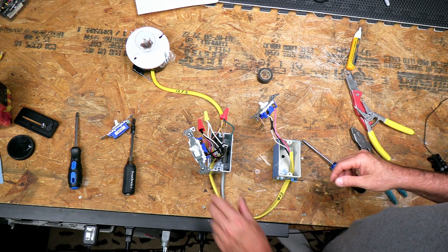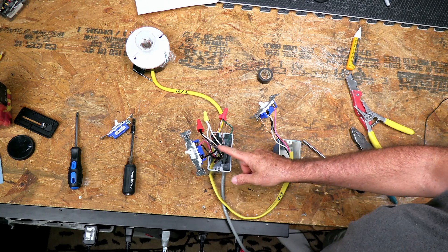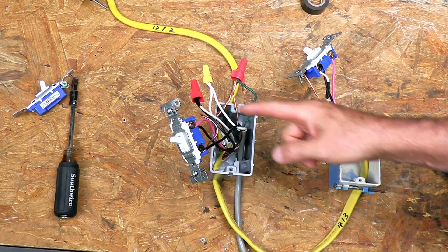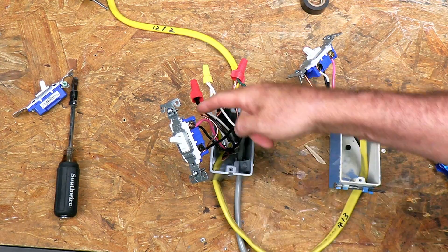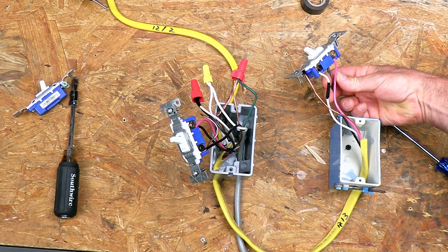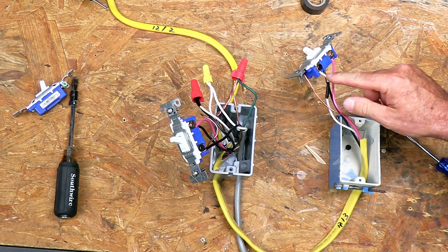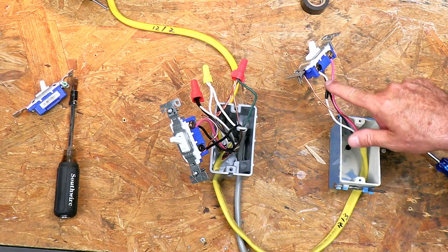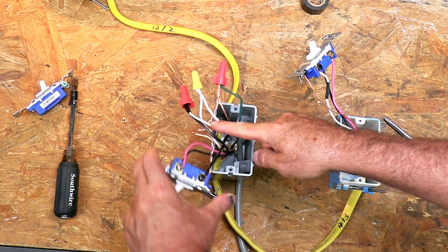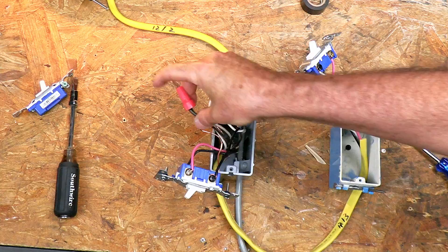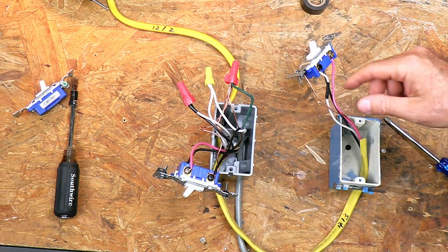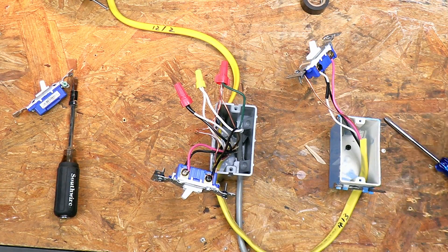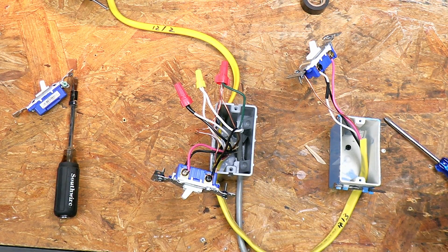So I hope that made sense. So basically, we have our hot coming in to our first three-way. This is our original switch location. That power is leaving on the travelers. Depending on the position of the switch, it's coming over here on the travelers. And then it's leaving on the black screw when we turn our switch on, on the white wire. Coming back here on the white wire. And then that is going to our light. So that's it. Our commons are tied together and our grounds are tied together. They don't affect the circuit. So I hope that all made sense. I hope this video was helpful.